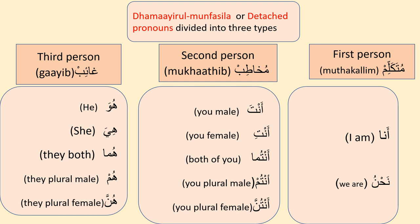We already understood what Dhamaa'ir al-Munfasila are. They are divided into three types: first person, second person, and third person. First person in Arabic is called Mutakellim, second person is called Mukhaatib, and third person is called Gha'ib.